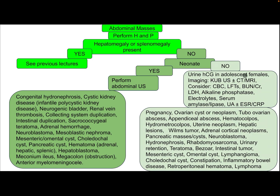If the patient is not a neonate, perform urine HCG in adolescent females. Imaging options include KUB, ultrasound, CT, and MRI. Consider complete blood count, liver function tests, blood urea nitrogen, creatinine, LDH, alkaline phosphatase, electrolytes, serum amylase, lipase, urinalysis, ESR, and C-reactive protein.